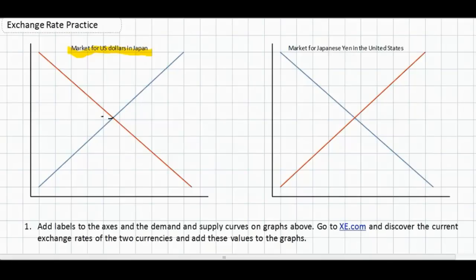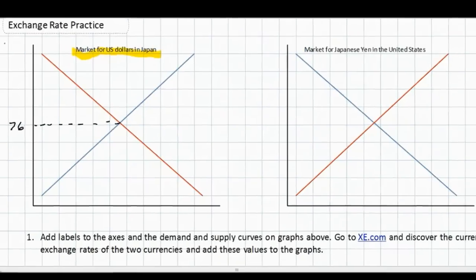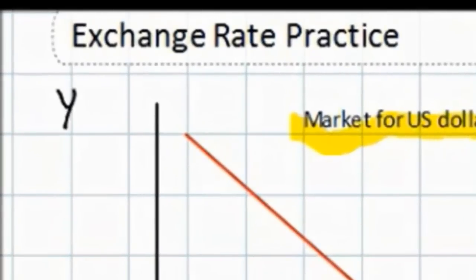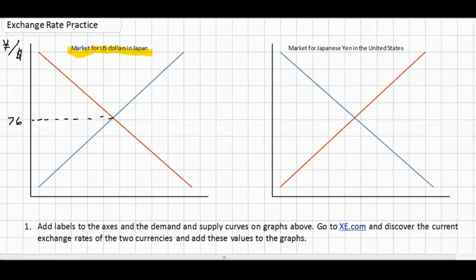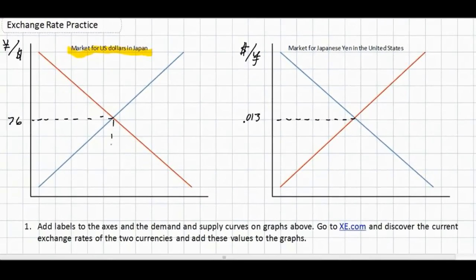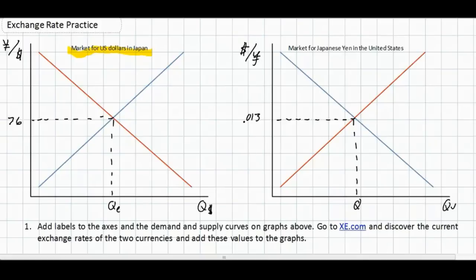First let's look at the US dollar — the current rate is 76 yen per dollar. The label for the vertical axis, since we're in the market for US dollars, is the number of yen per dollar. In the other graph we can show the equilibrium exchange rate as $0.013 dollars per yen. We need to label our equilibrium quantities as QE, and label the horizontal axes as the quantity of dollars demanded and supplied in Japan, and the quantity of yen demanded and supplied in the US.